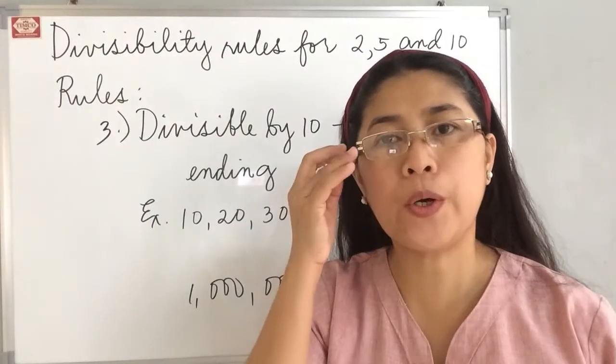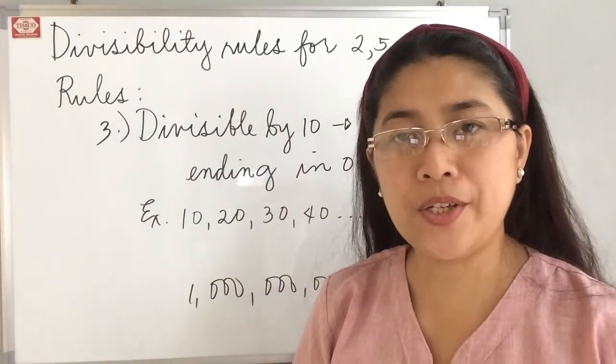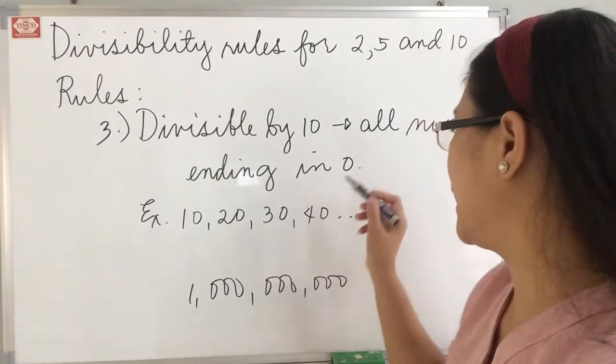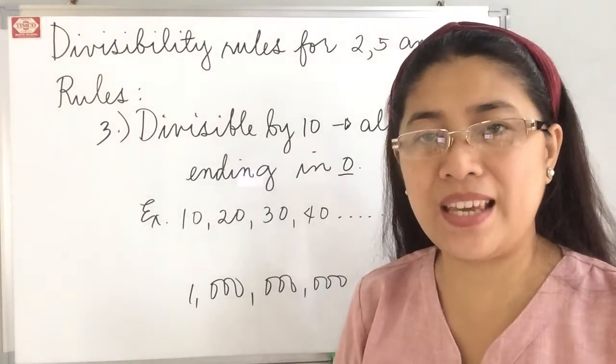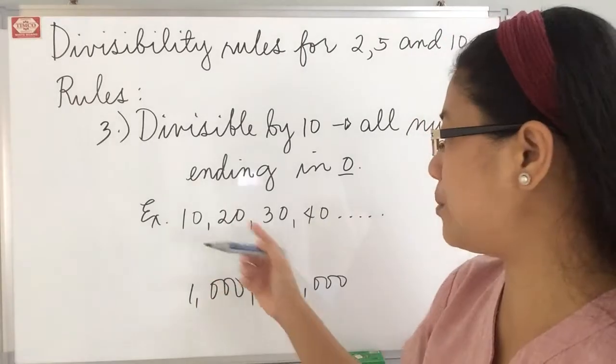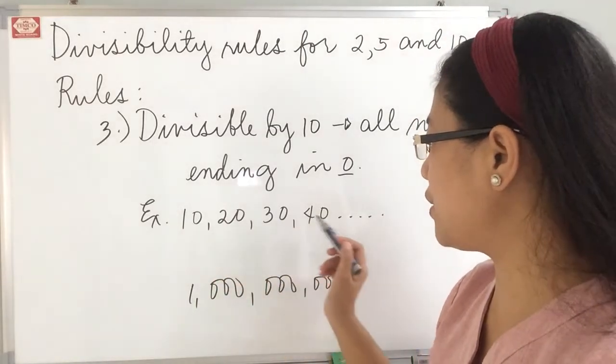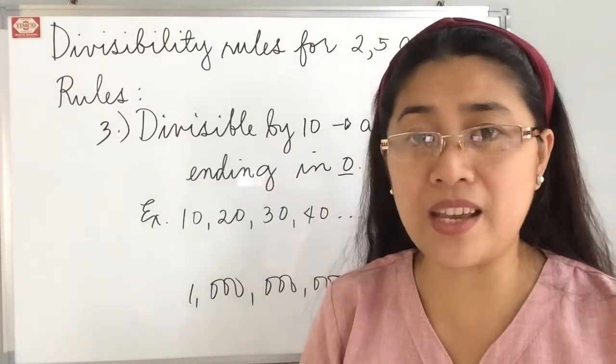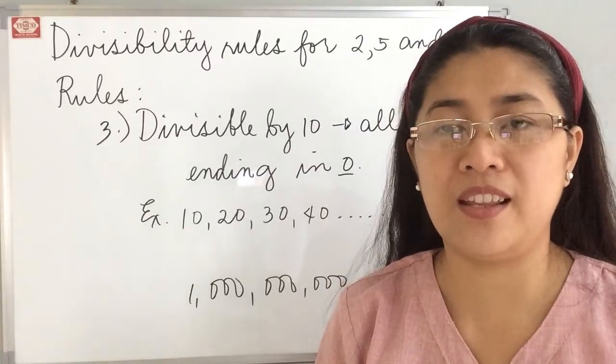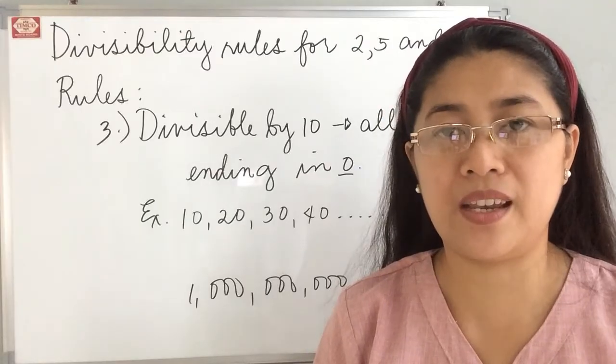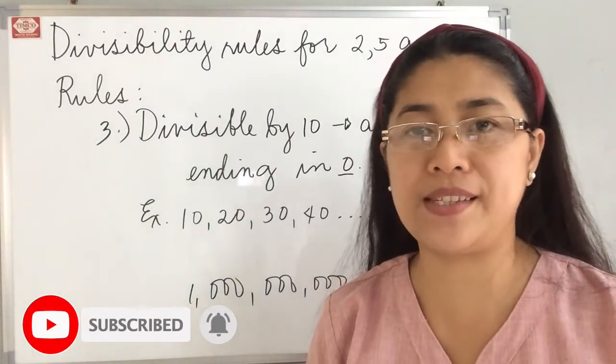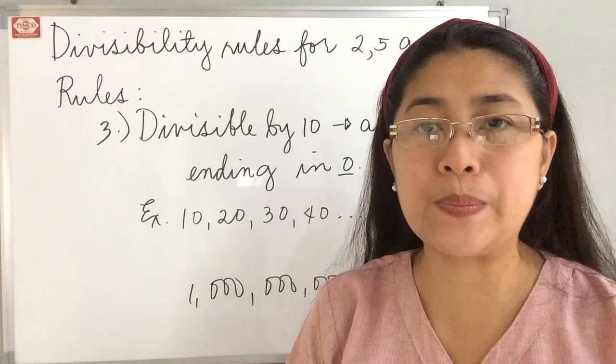And the last rule is for number 10. A number is divisible by 10 if it ends with 0 only. So all numbers ending in 0 are divisible by 10. For example, we have 10, 20, 30, 40, or you skip count by 10. All of the numbers that you can encounter by skip counting by 10, those numbers are divisible by 10. Even 1 billion, it ends with 0, so therefore, 1 billion is divisible by 10. That's how simple it is.